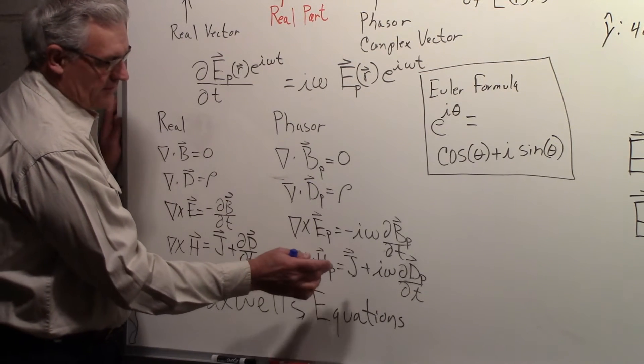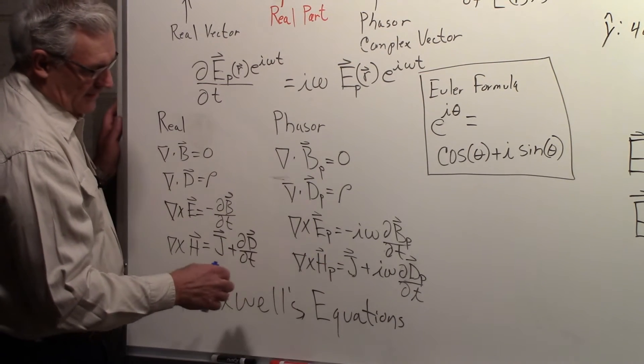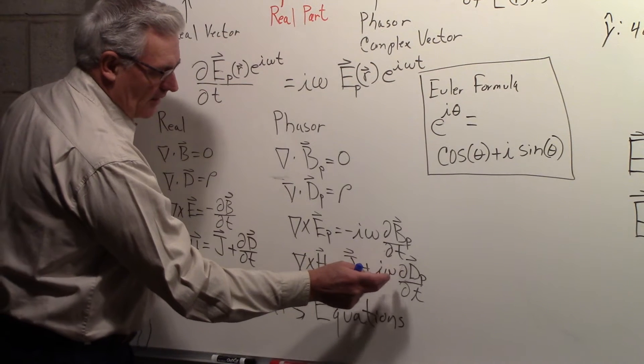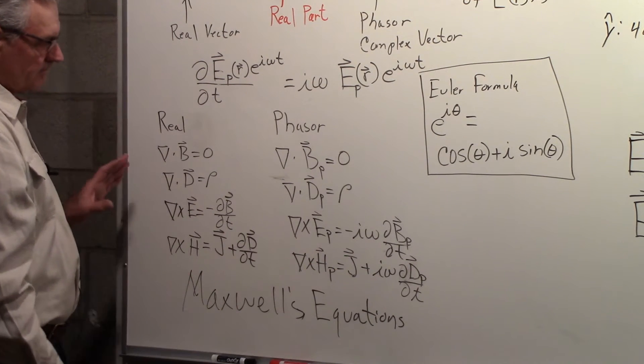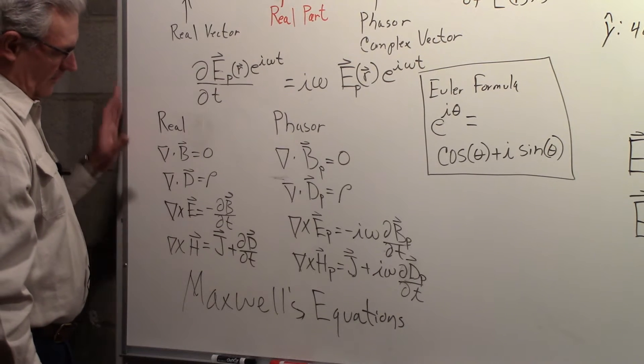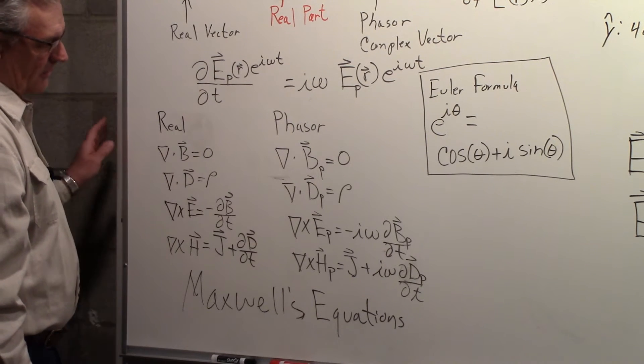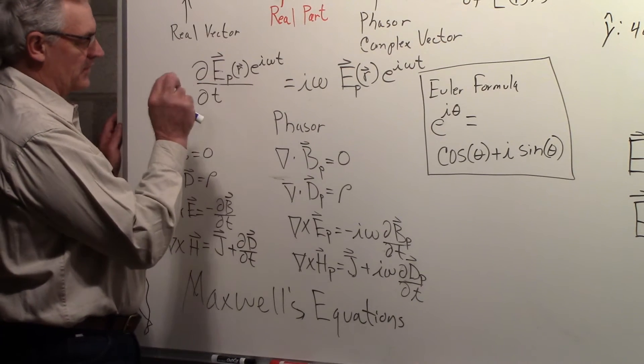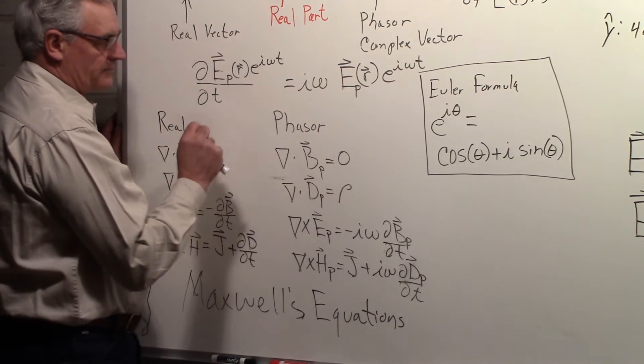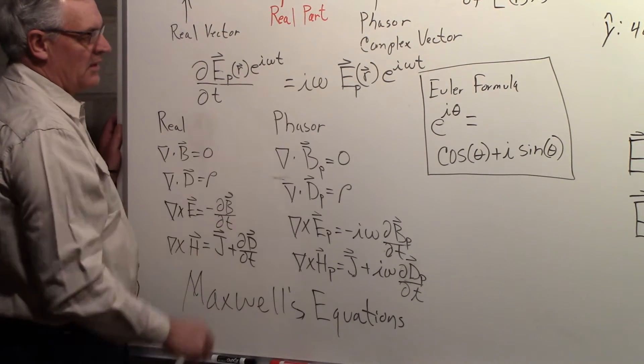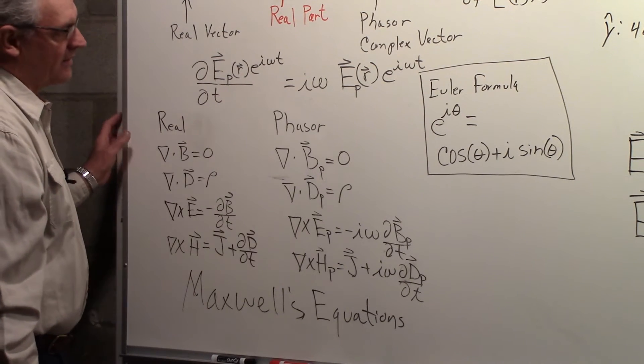And similarly, with the curl of h, it'll be the current density j plus i omega partial of d p with respect to t. So that's an example of how they would look in Maxwell's equations, and again, the advantage of having this form is when you take the partial with respect to t, you get back the original with the factor i omega out in front.